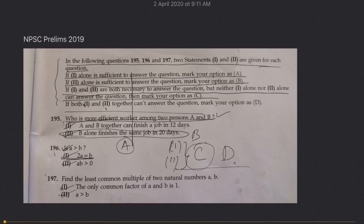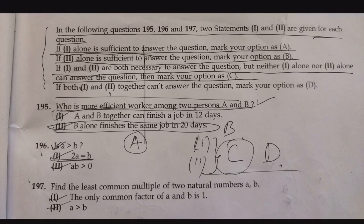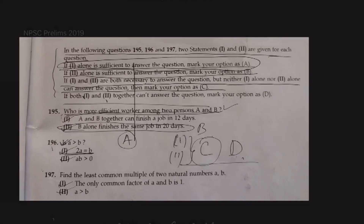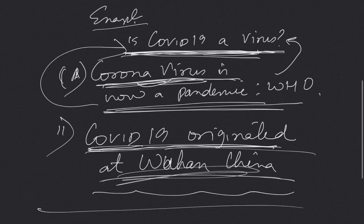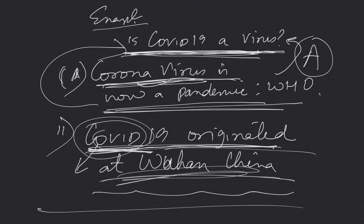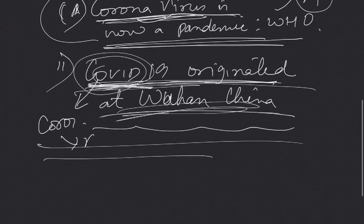Now imagine statement 2 is: COVID-19 originated in Wuhan. This statement doesn't tell us whether it is a virus or a bacteria or whatever. So from statement 1 alone we can answer the question — that would be option A. If you're thinking COVID-19 is obviously a virus, you are completely missing the point of my example.